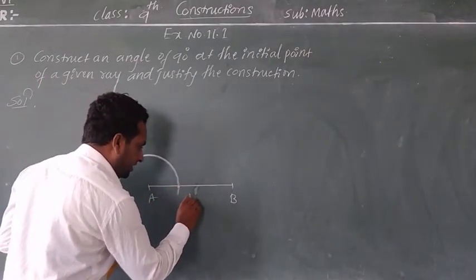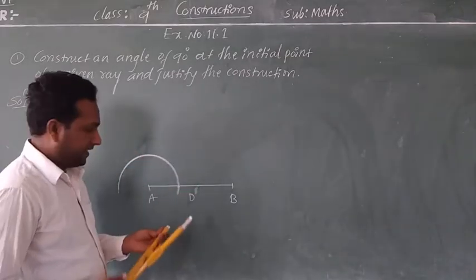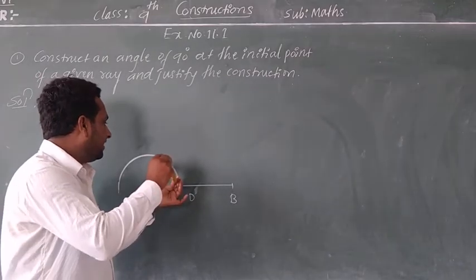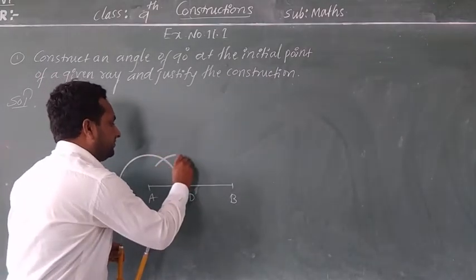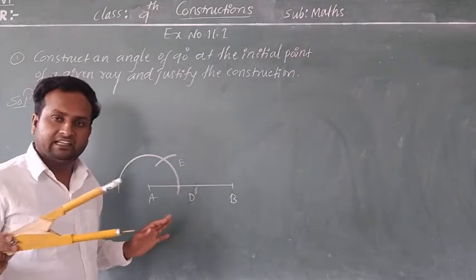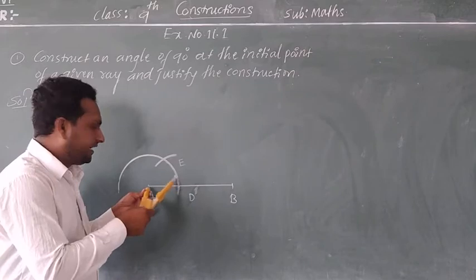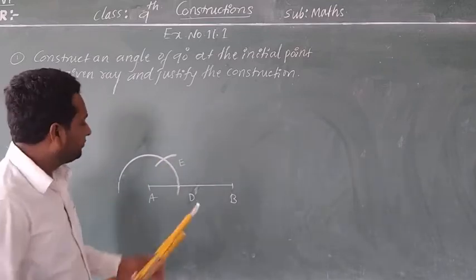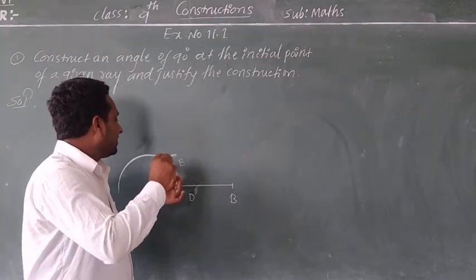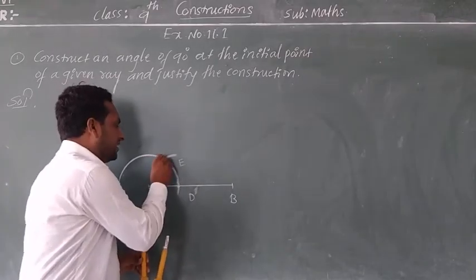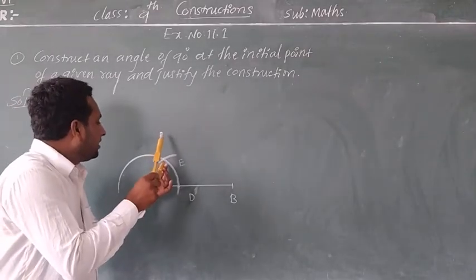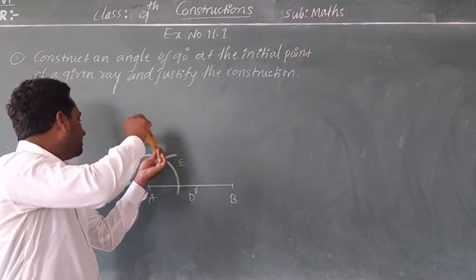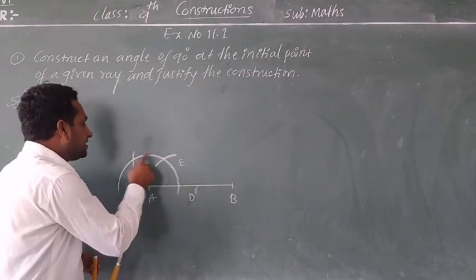The semi-circle intersects AB at a point — call it D. Without changing the radius, with D as center, cut the arc at a point E. This gives us a 60 degree angle. Now, with the same radius and A as center, cut one more arc to get another 60 degree, giving us 120 degree total.